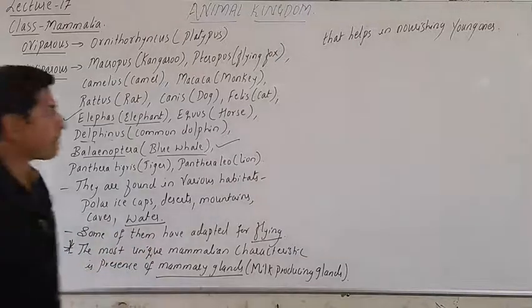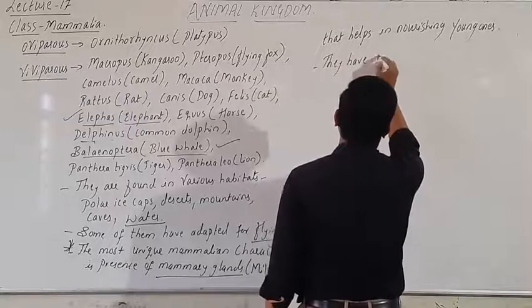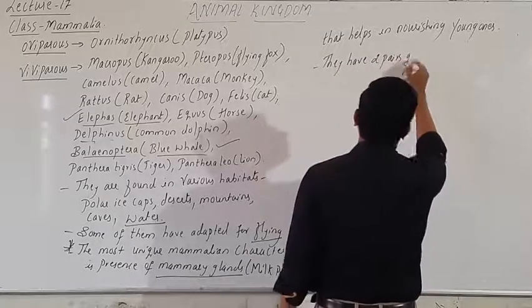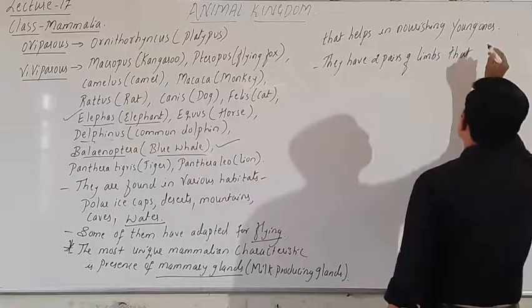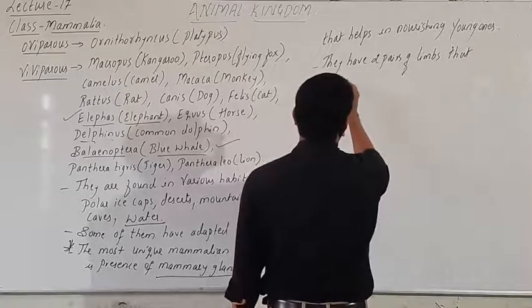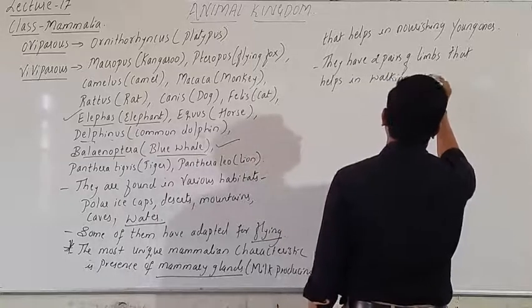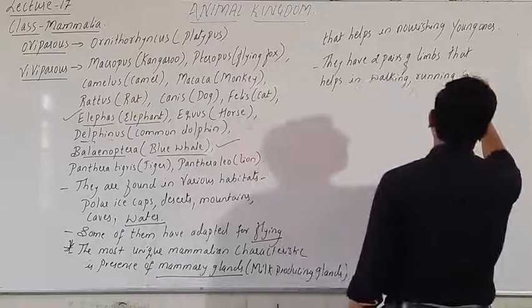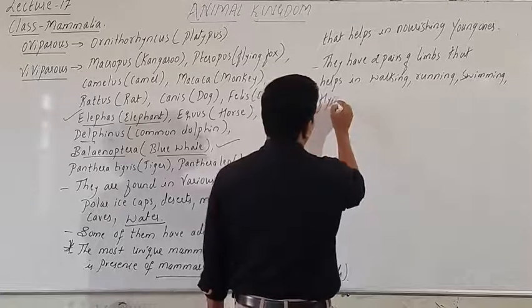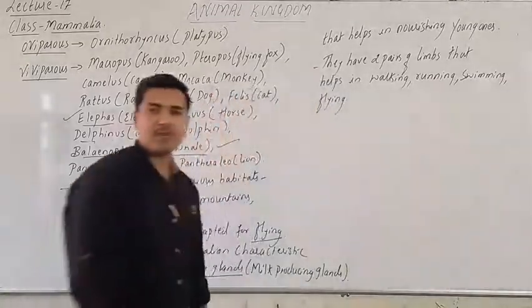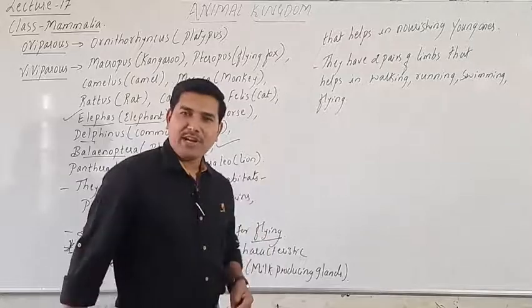Mammals have two pairs of limbs that help in walking, running, swimming, flying, etc. The two pairs of limbs can be used for any of these purposes depending on the variety of animals.